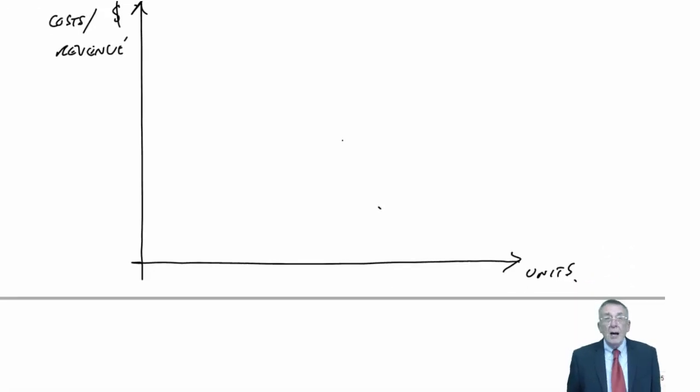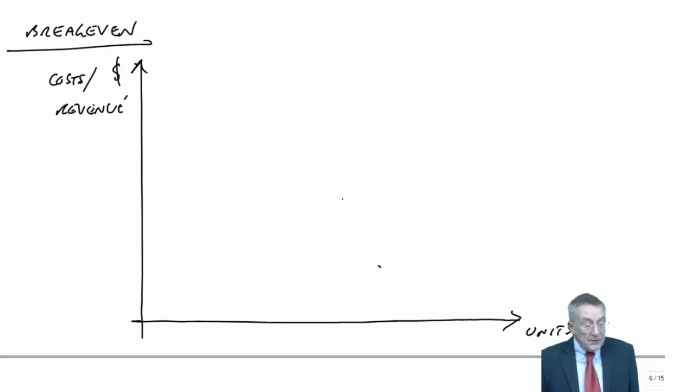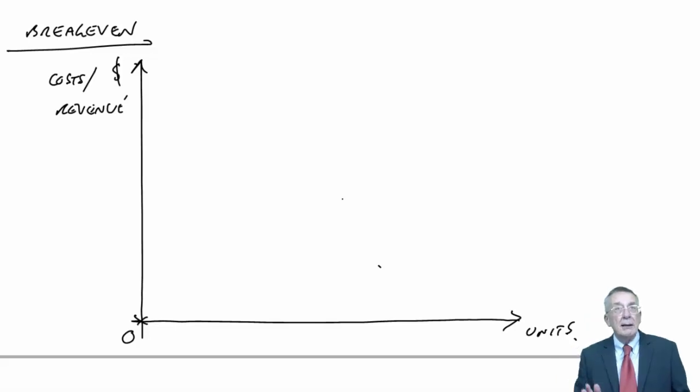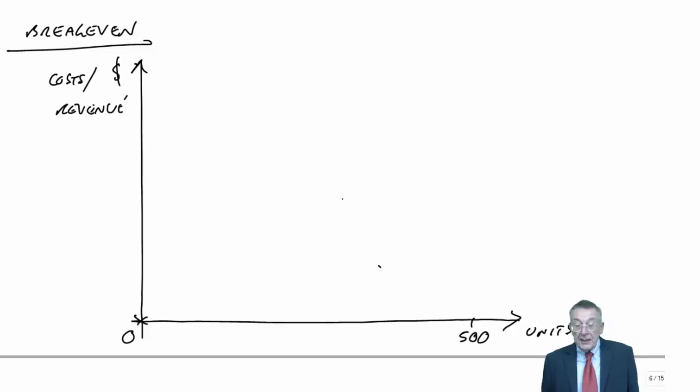The break-even chart shows the various costs and revenue for different levels of output. First of all, revenue. The revenue was $6 a unit. If we sell no units, the revenue is zero. More and more units, it's a straight line. I'll go up to 500 units. At 500 units, at $6 a unit, the revenue would be $3,000.